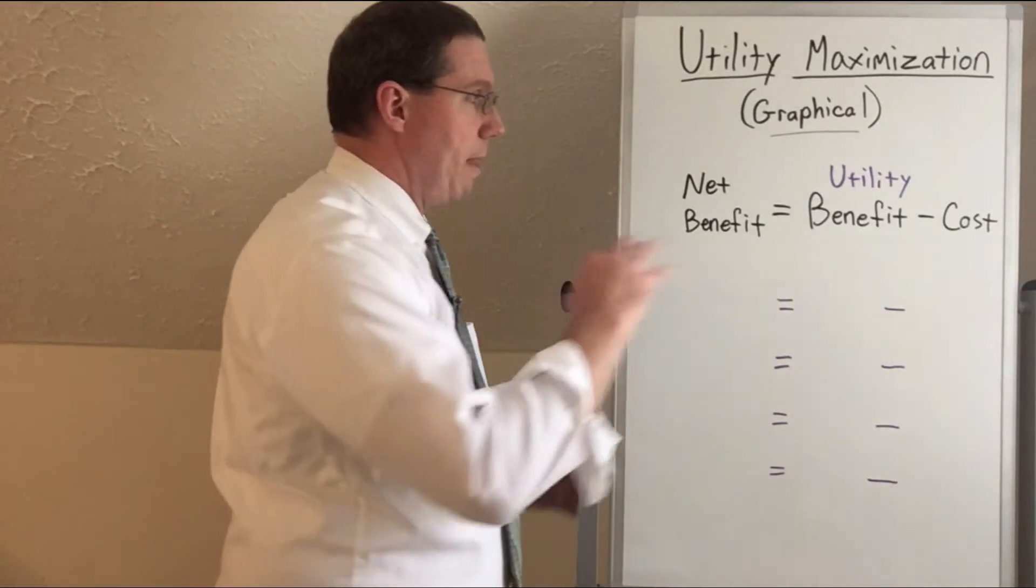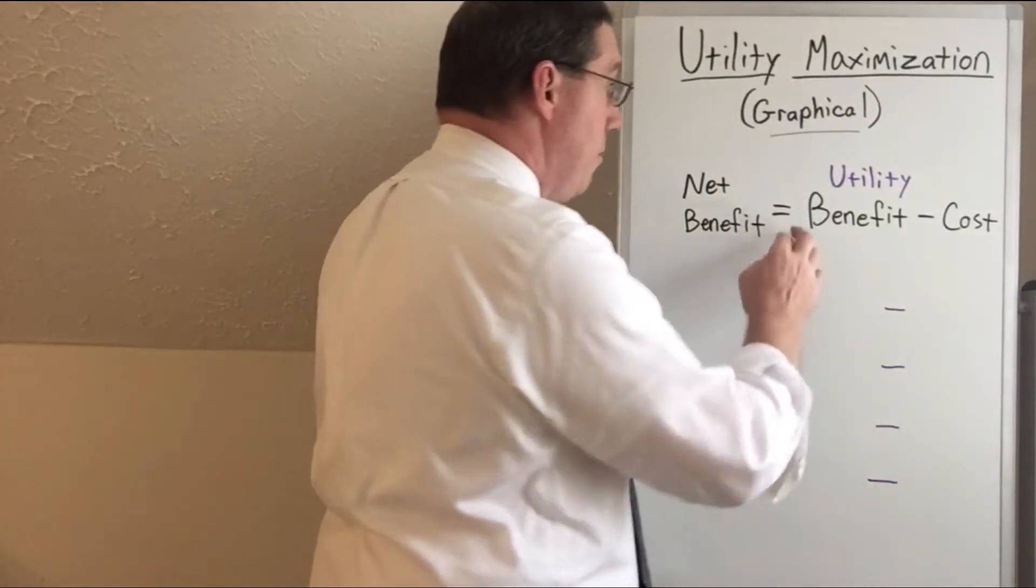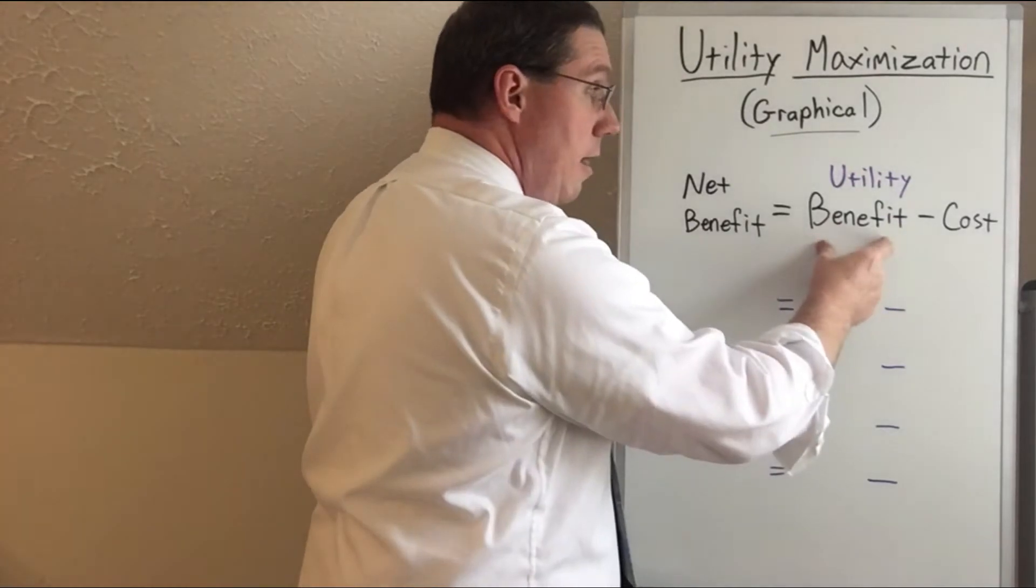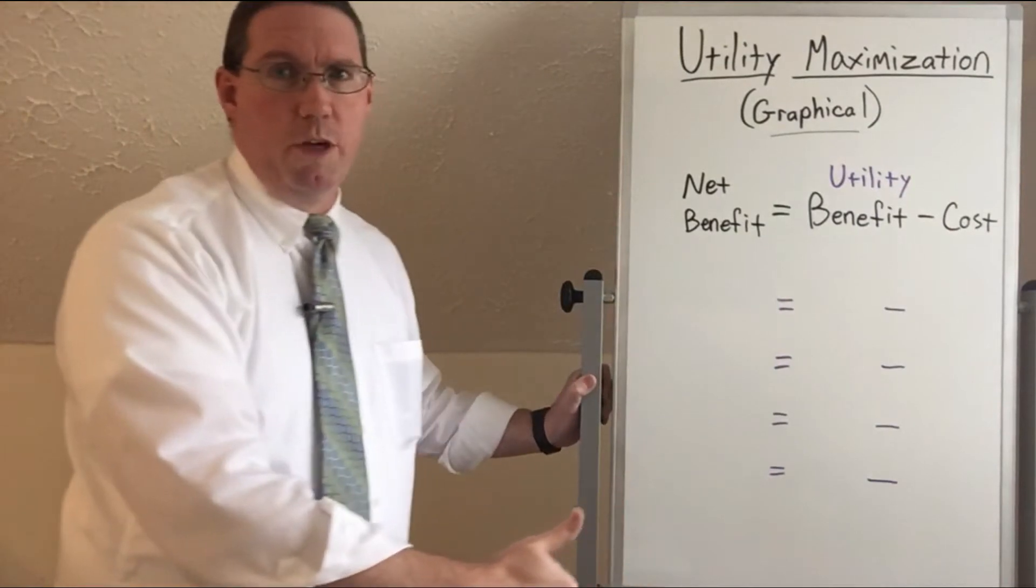We have the basic formula: the net benefit, that's all of the utility that we're going to get, is going to be equal to the utility that we get from consuming things minus the cost of consuming those things.